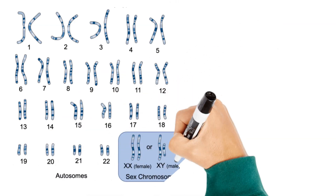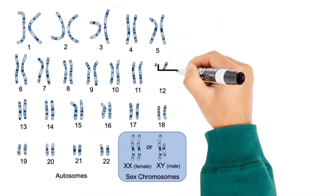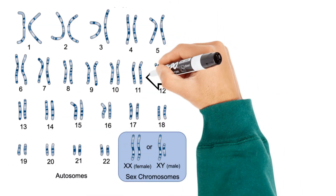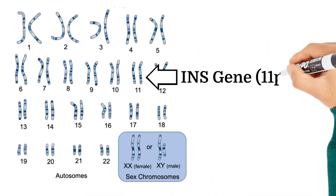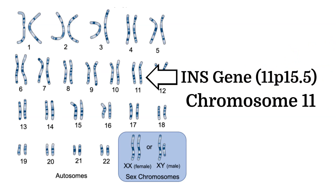Insulin is coded by the insulin gene, or INS gene, located on the short arm of chromosome 11 at position 15.5.